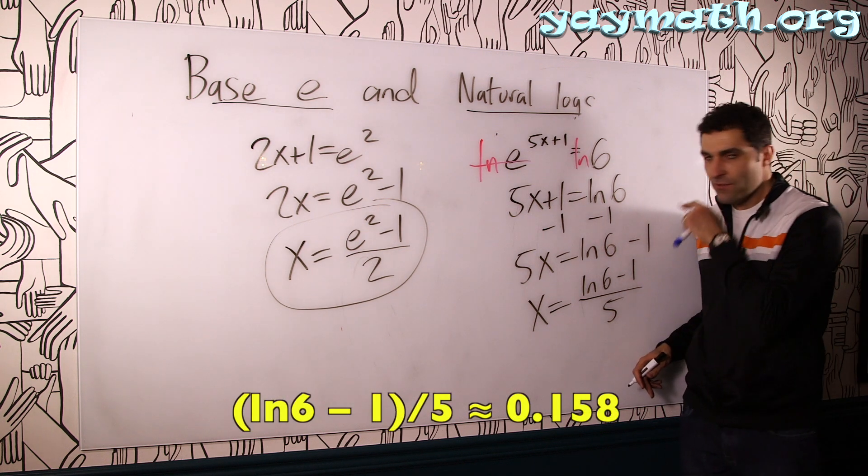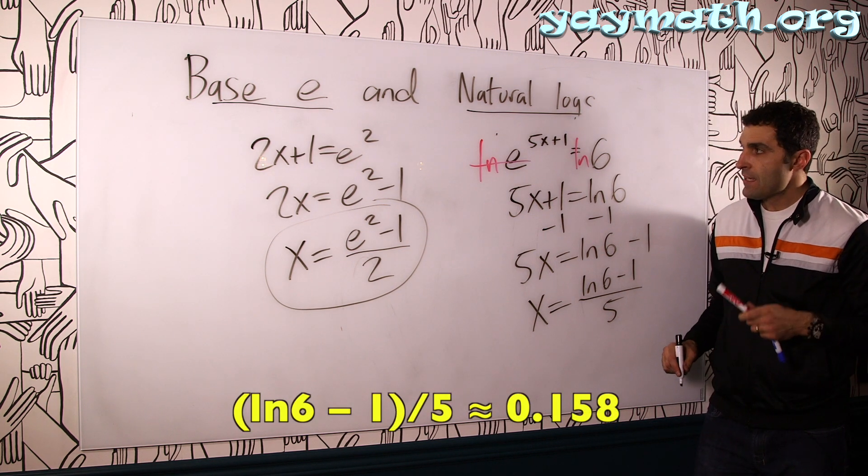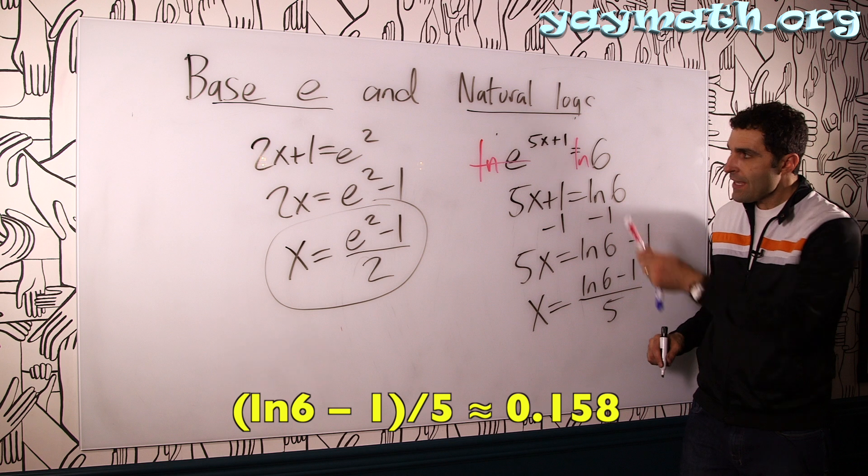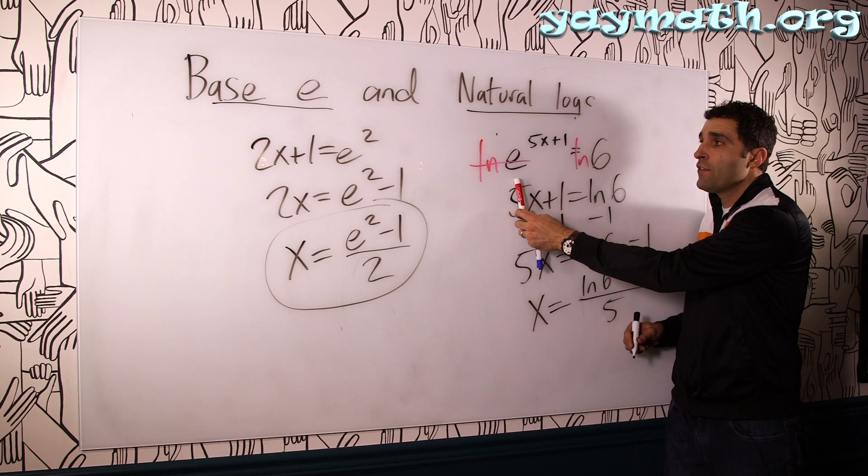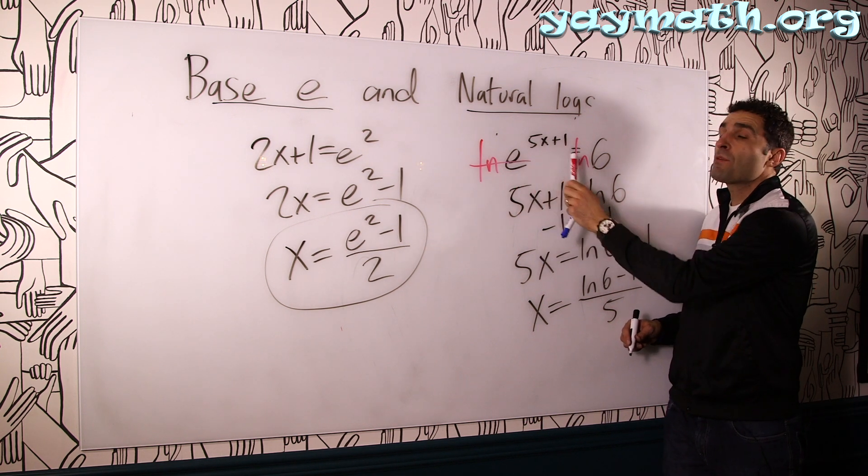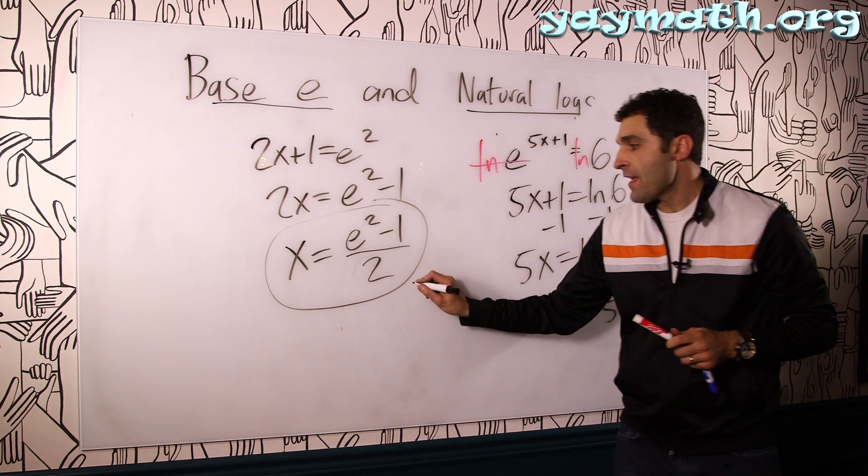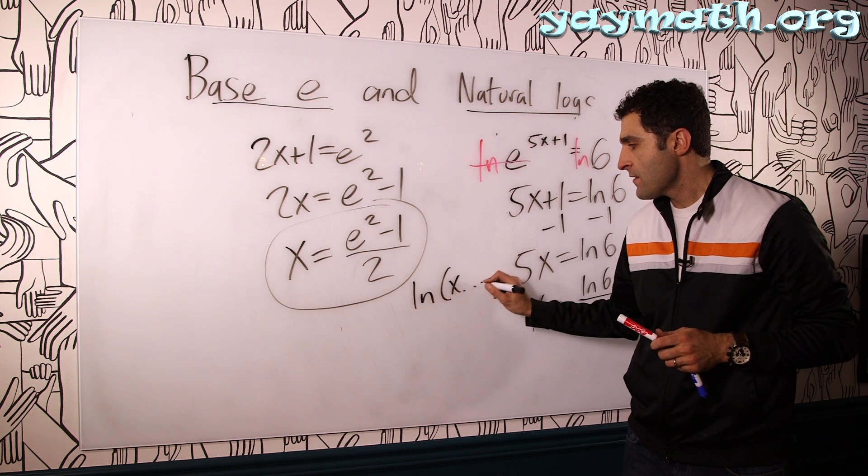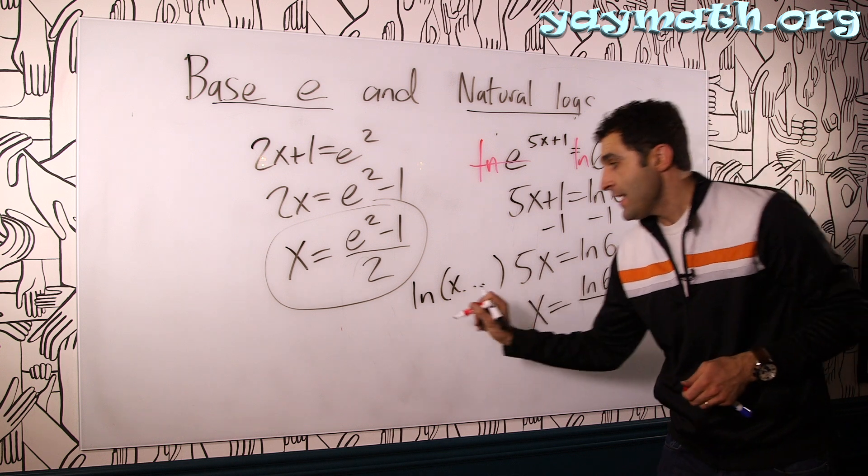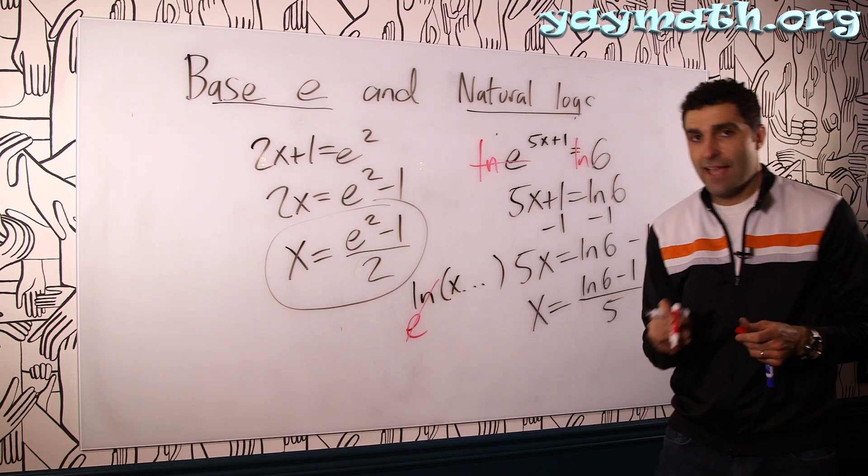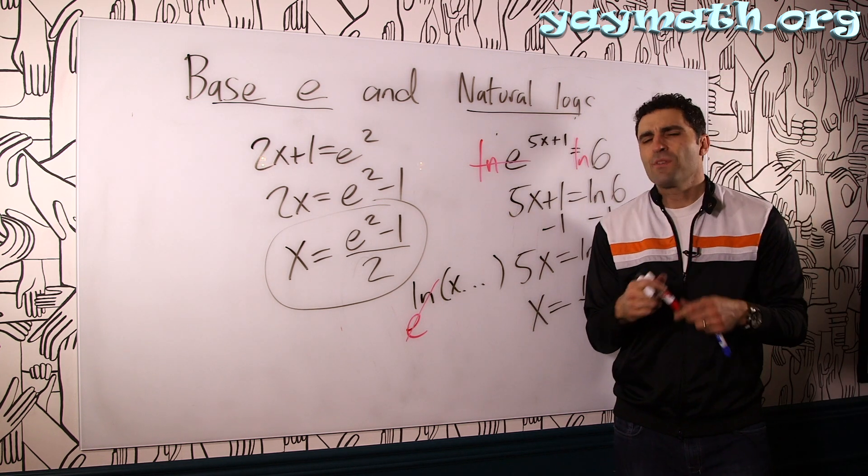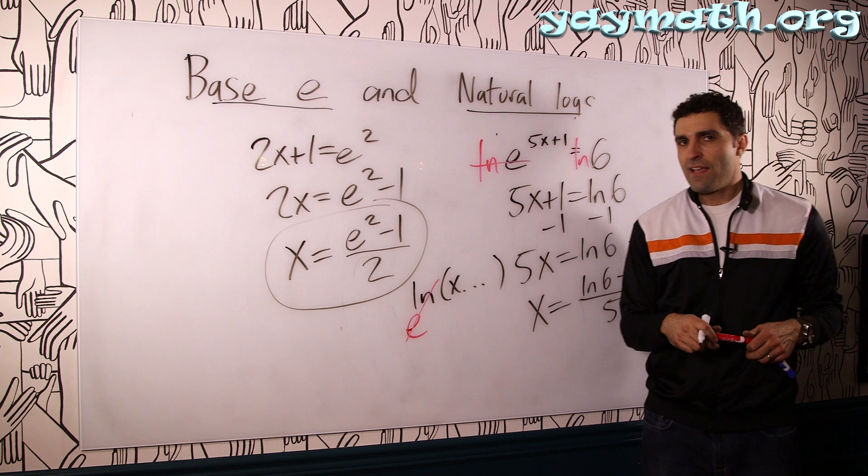Let you catch up to that in case you're writing it down. Now, in short, anytime you have an equation involving E with x, be prepared to do LN both sides to cancel the E. Anytime you have an equation with LN involving x, be prepared to do E to cancel the LN. That's all that is. Once you get the hang of it, it's going to make sense.